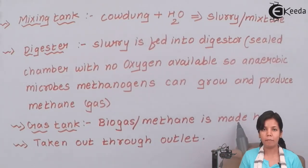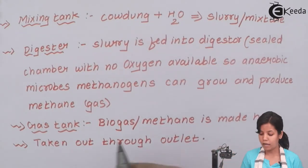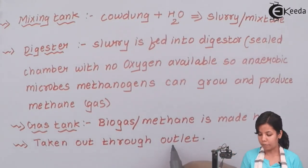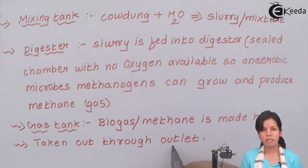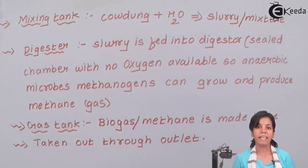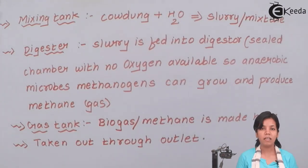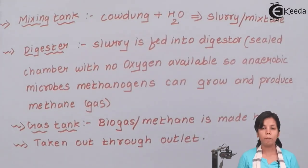When you need the biogas, you go to the last part which is the outlet. Through the outlet, biogas is taken out and put to use. In this part of the chapter, we have seen how biogas is produced by various means using various microorganisms.